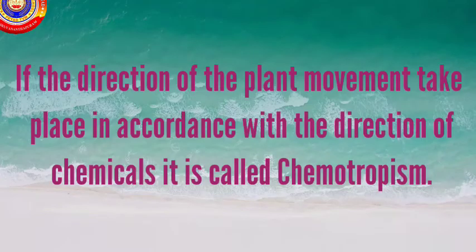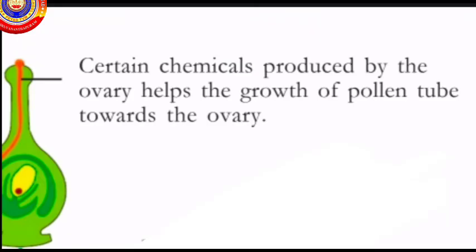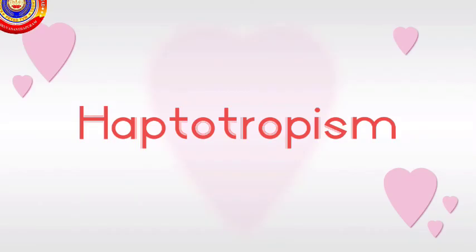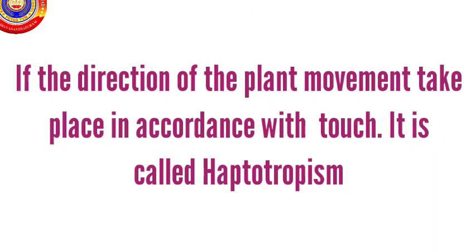If the direction of the plant movement takes place in accordance with the direction of chemicals, it is called chemotropism. The plant part that moves is the pollen tube. Certain chemicals produced by the ovary help the growth of the pollen tube towards the ovary.